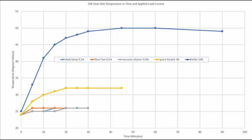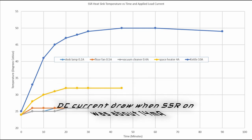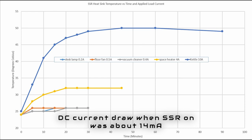So, in summary, this graph shows the results of monitoring the solid state relay heat sink temperature over time when various continuous load currents were applied. I also measured the DC current draw when the SSR was on, which was about 14 milliamp. And it appears that this solid state relay is a useful component, with the heat sink only getting to about 50 degrees with a 10 amp load applied for 90 minutes.